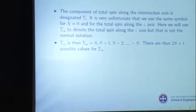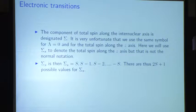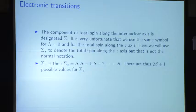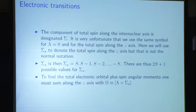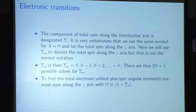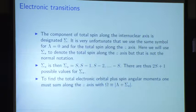The component of total spin along the internuclear axis is designated sigma — unfortunately the same letter used for lambda equals zero, so I'll call it sigma sub s to indicate it's spin-related. The spin-related sigma along the axis can equal different values of s, giving 2s plus 1 values total. We want to find the total electronic orbital plus spin angular momentum — not including nuclear yet. Summing along the z-axis gives omega, which is the sum of the orbital and spin electronic contributions along the z-axis.